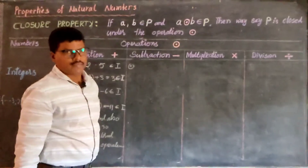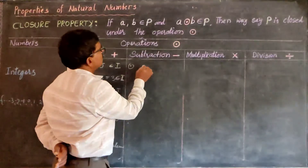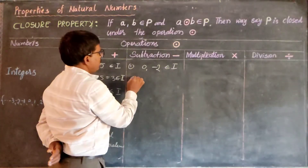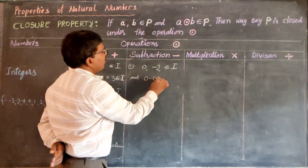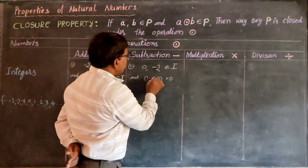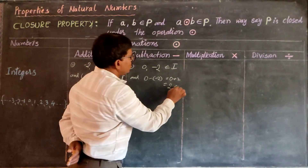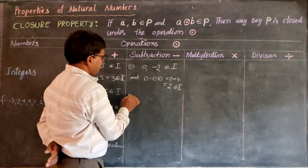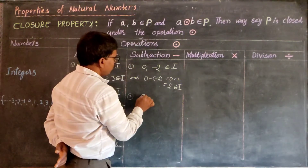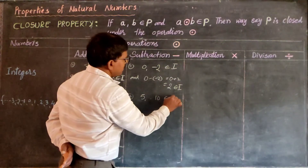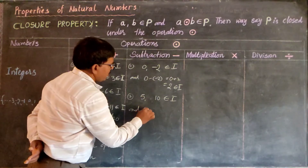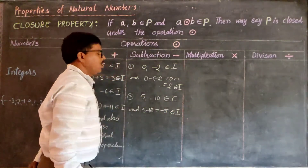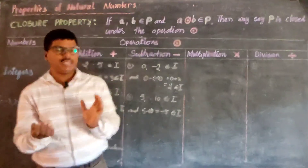Now take two integers and find their difference. 0 and minus 2 are two integers, and 0 minus minus 2 is plus 2, which equals 2. This 2 is also an integer. Take another example: 5 and 10 are two integers, and 5 minus 10 is equal to minus 5. This minus 5 is also an integer. So the difference of any two integers is also an integer.